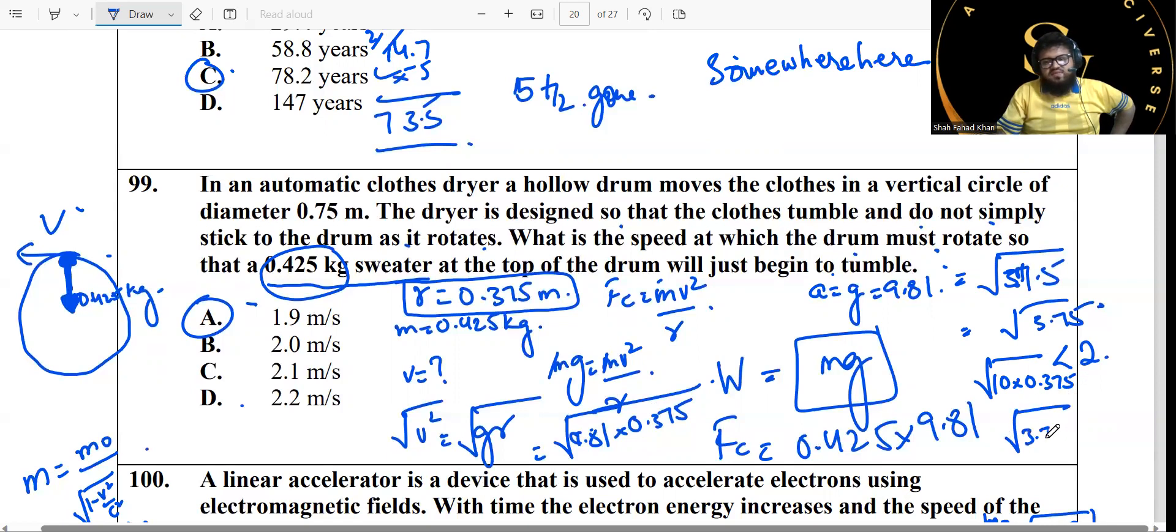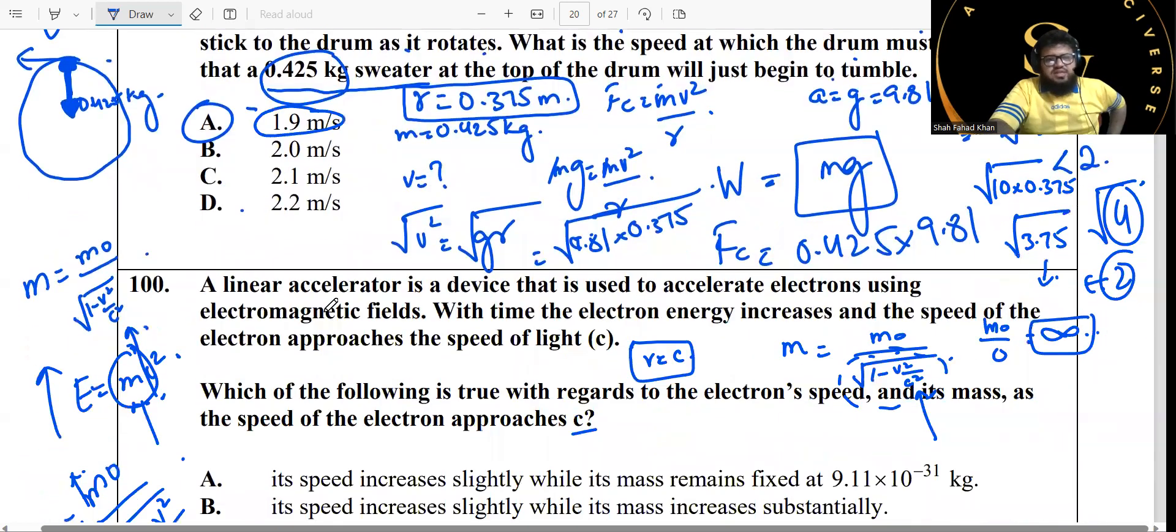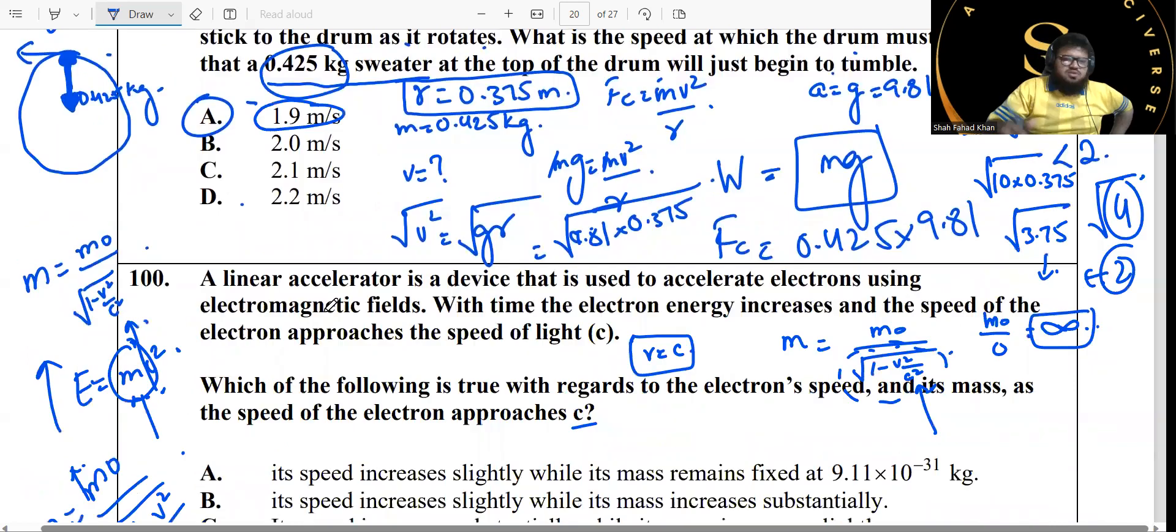So you have g is 10 and r is 0.375. When you do the calculation here, the 10 multiplied by 0.375 will actually give you under root of 3.75, and under root of 3.75 is very close to 4, right? Under root 4 answer is 2, but this answer is not going to be 2, it's going to be slightly less than 2. Because it's going to be slightly less than 2, and this is the only answer that's less than 2, that's it.